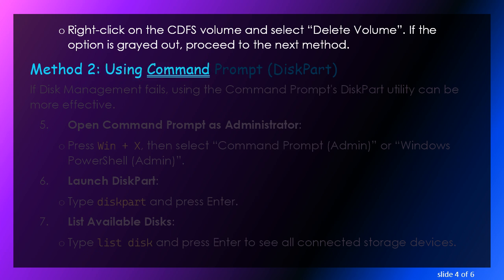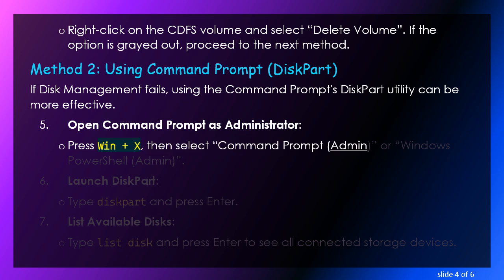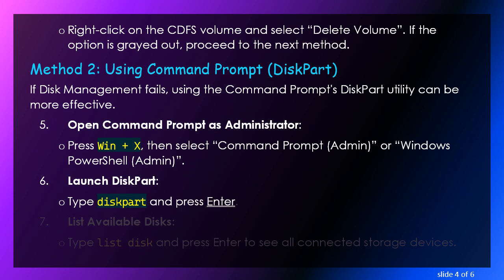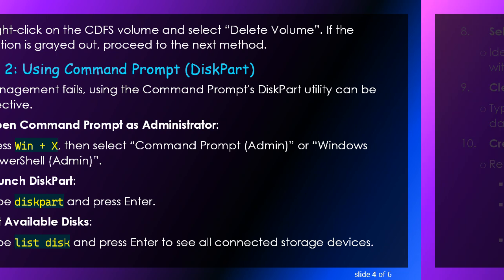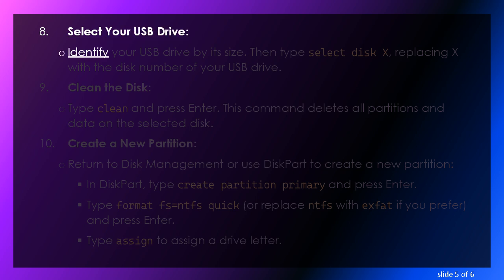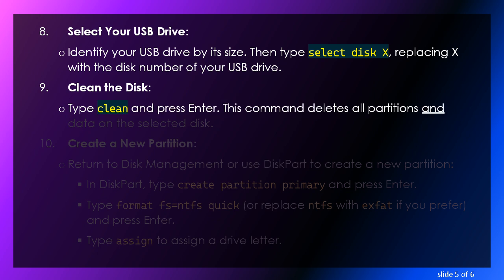Method 2: Using Command Prompt — DiskPart. If Disk Management fails, using the Command Prompt's DiskPart utility can be more effective. Open Command Prompt as Administrator by pressing Win + X, then select Command Prompt (Admin) or Windows PowerShell (Admin). Launch DiskPart by typing 'diskpart' and pressing Enter. Type 'list disk' and press Enter to see all connected storage devices. Identify your USB drive by its size, then type 'select disk X', replacing X with the disk number of your USB drive. Type 'clean' and press Enter — this command deletes all partitions and data on the selected disk.